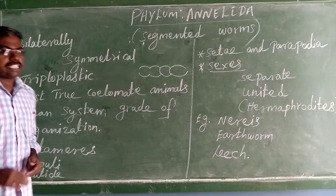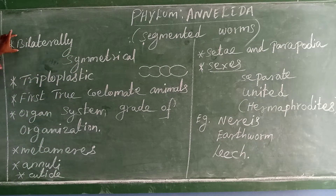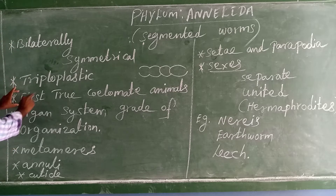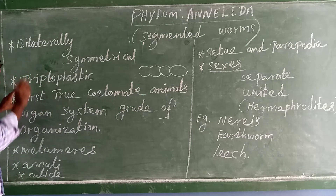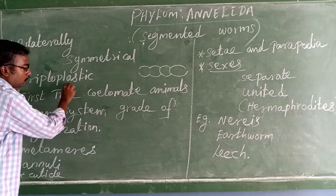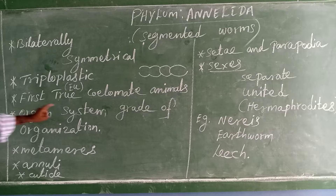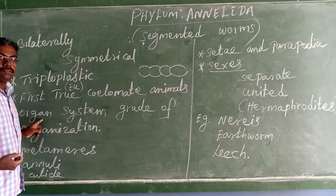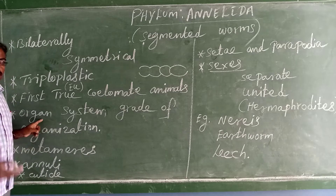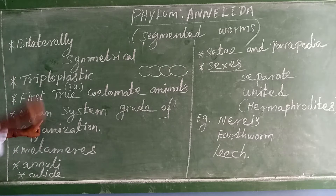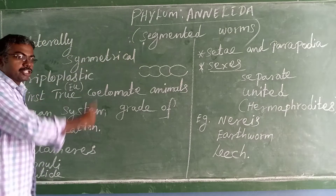Let us see the characteristic features of Annelida. They are bilaterally symmetrical and triploblastic. They are the first true coelomate animals. True coelom means there is a true cavity within the body. They show organ system grade of organization — we have a lot of organs like the digestive system, immune system, respiratory system. In Annelida only, the organ system first develops.